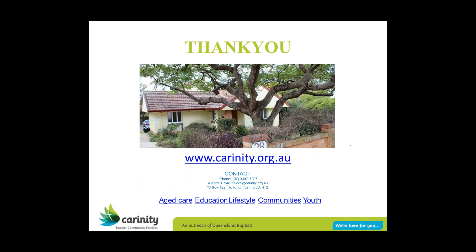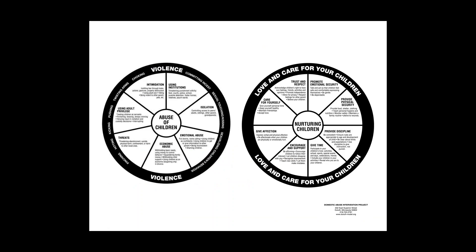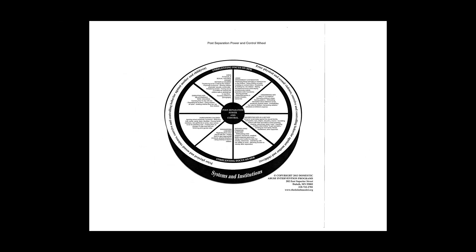You will be getting a copy of these slides. I've added in at the end some of the Duluth wheels. The Duluth website has a fabulous range of resources that really separates out what the difference between caring for children and the abuse of children is. And there's also the post-separation parent control wheel, which looks essentially at abuse on contact and how domestic violence continues to go on after the relationship has ended.